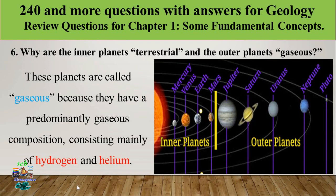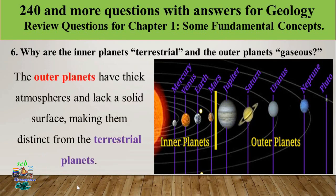The outer planets have thick atmospheres and lack a solid surface, making them distinct from the terrestrial planets. Terrestrial planets have solid, rocky compositions similar to the Earth, while gaseous planets have thick atmospheres and a gaseous nature.